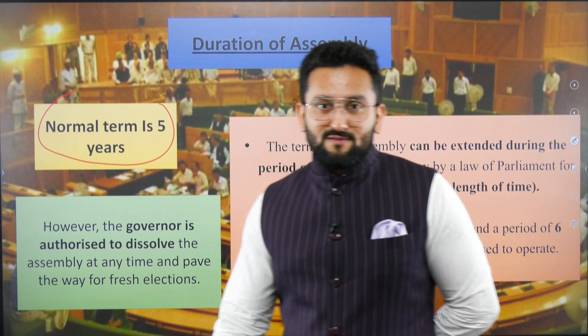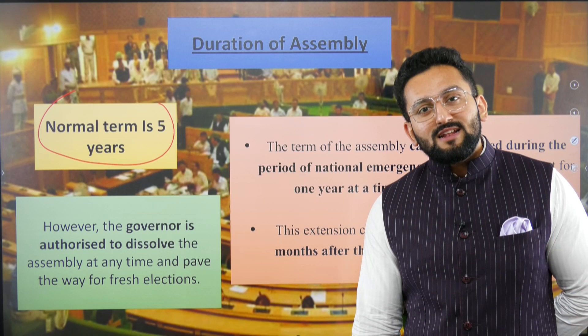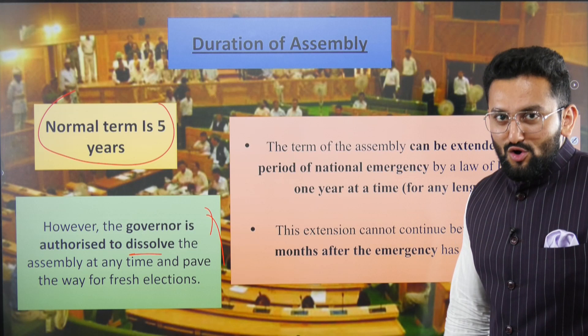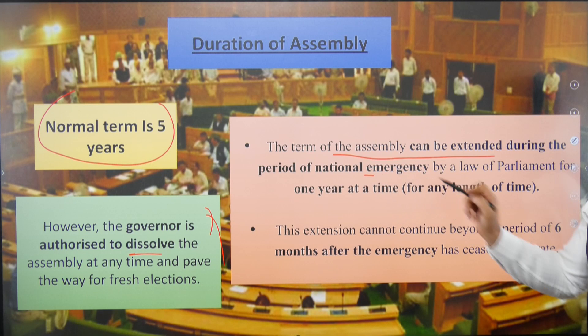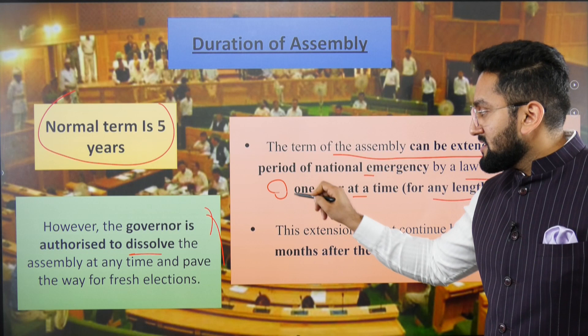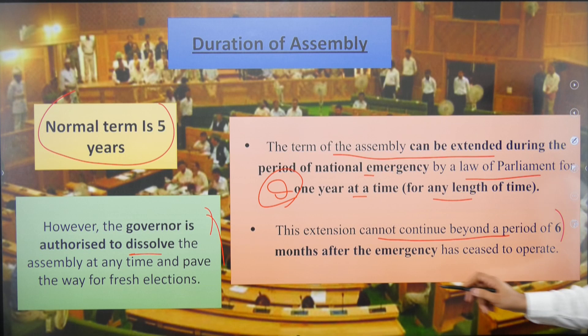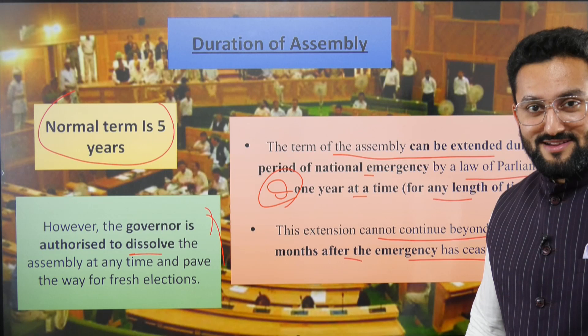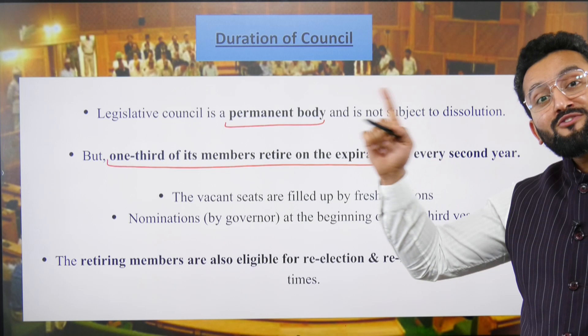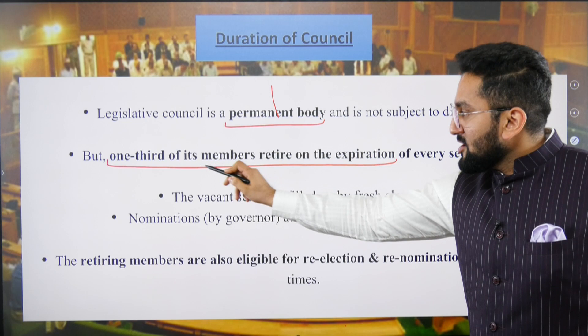Regarding duration: the normal term of the legislative assembly is five years, but the governor is authorized to dissolve the house before that on the advice of the council of ministers. The term of the assembly can be extended during the period of national emergency by Parliament, one year at a time, for any length of time, but the extension cannot continue beyond six months after the emergency ceases to operate.